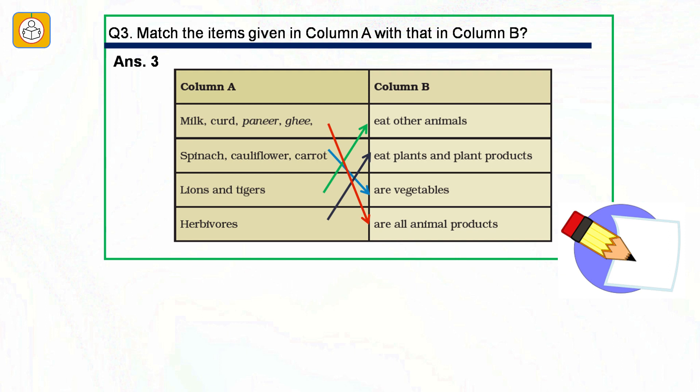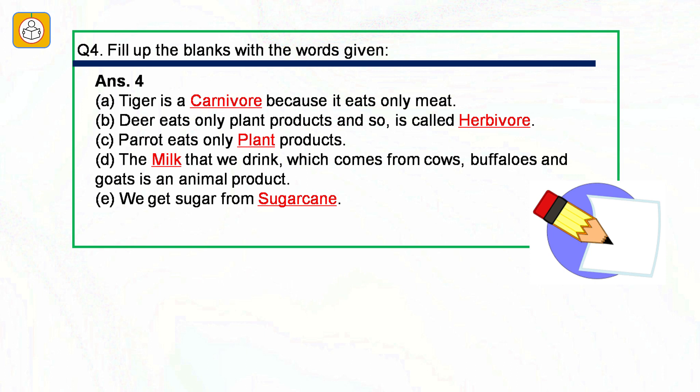Question number three: Match items in column A with column B. Milk, curd, paneer and ghee are all animal products. Spinach, cauliflower and carrot are vegetables. Lions and tigers eat other animals. Herbivores eat plants and plant products. Question number four: Fill in the blanks. Tiger is a carnivore because it eats only meat. Deer eats only plant products and so is called herbivore. Parrot eats only plant products. The milk we drink from cows, buffalo and goats is an animal product. We get sugar from sugarcane.